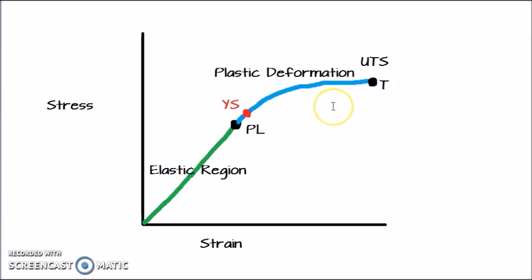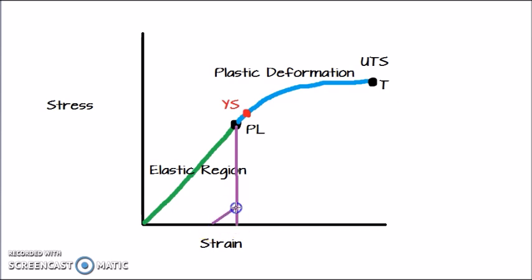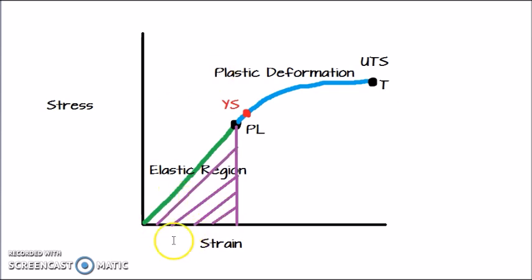Now there are two things left: resilience and toughness. Resilience is basically the energy absorbed by the material till the proportional limit or within the elastic limit. We will draw a line in purple from the proportional limit down to the strain axis, and this area under the curve is resilience. So let's write resilience over here.